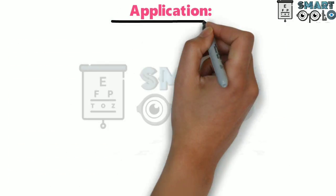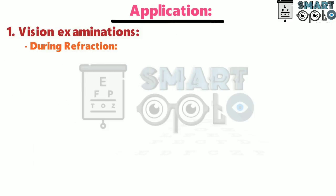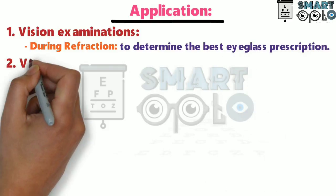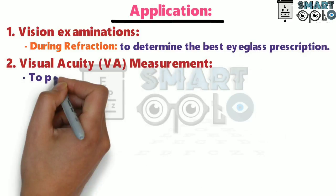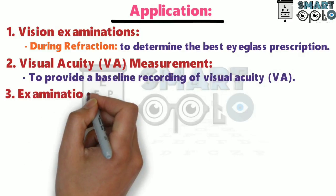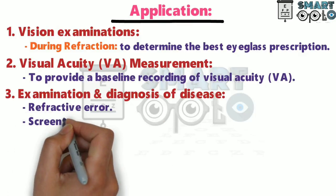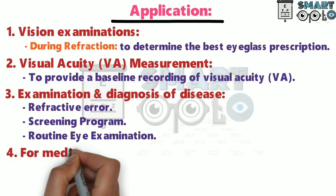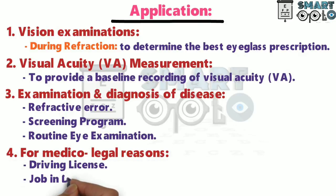Applications of Snellen's chart: First, vision examination during refraction — we use Snellen's chart to determine the best eyeglass prescription. Second, visual acuity measurement — to provide a baseline recording of visual acuity. Third, examination and diagnosis of diseases like refractive error, screening programs, and routine eye examinations. Fourth, for medico-legal reasons like driving licenses and jobs in defense.